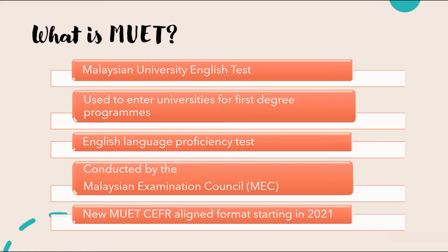You can find anything and everything you need to know about MUET on the MEC portal, so do visit it. MUET has undergone some major changes recently. Starting from the year 2021, MUET comes in a new format for all papers. This new format is what is described as CEFR aligned, which means that the aggregated score for MUET will be in line with the CEFR global scale. The changes affect the papers in all aspects: the paper format, the time allocation, the scoring, the band used, and the descriptors for bands awarded.